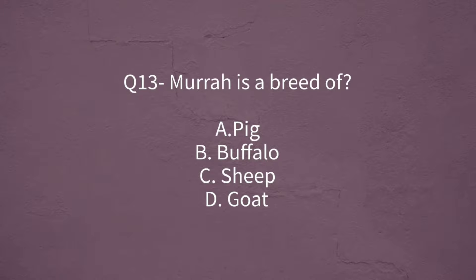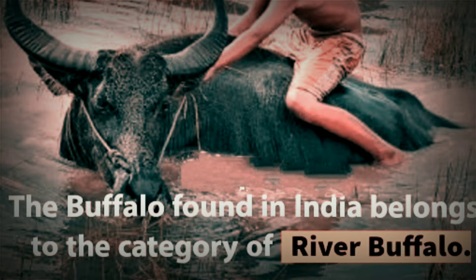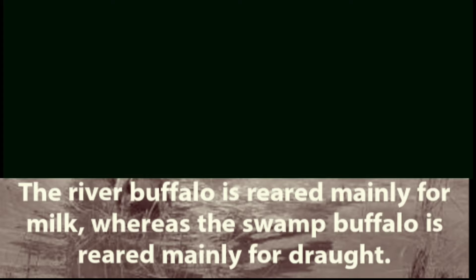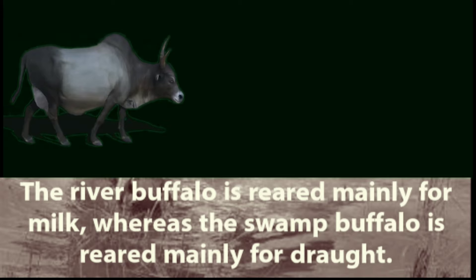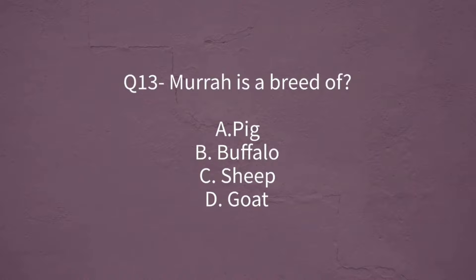Question number 13: Murrah is a breed of which animal? The options are pig, buffalo, sheep, or goat. The correct answer is buffalo. Note that buffalo in India belongs to the category of river buffalo. River buffalo is reared mainly for milk, whereas swamp buffalo is reared for drought work. India ranks first in buffalo production.